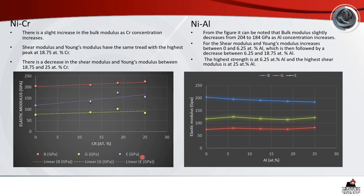For nickel-aluminium mechanical properties, the bulk modulus slightly decreases from 204 to 184 GPa as aluminium concentration increases. For the shear modulus and Young's modulus, there is an increase between 0 and 6.25 atomic percent aluminium, followed by a decrease between 6.25 and 18.75 atomic percent aluminium. The highest strength is at 6.25 atomic percent and the highest shear modulus is at 25 atomic percent aluminium. Nickel-chrome alloys have the greatest strength compared to nickel-aluminium alloys.